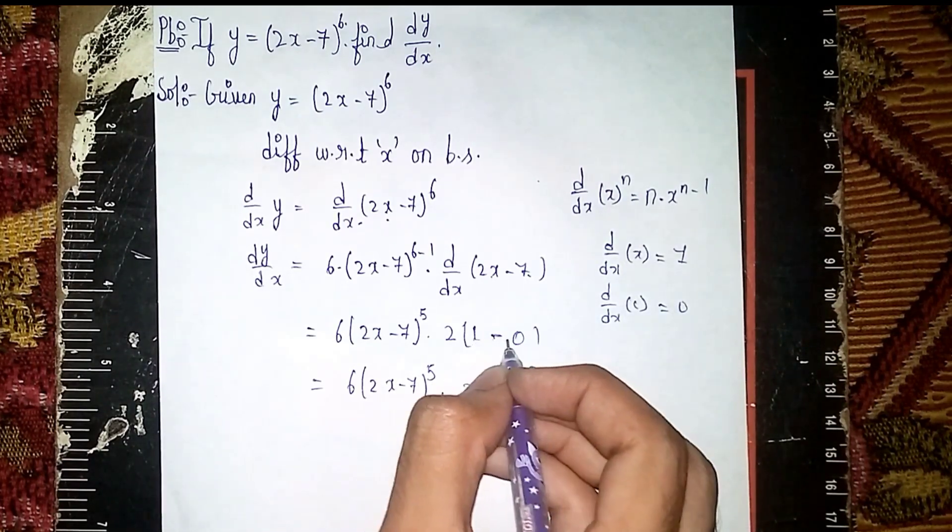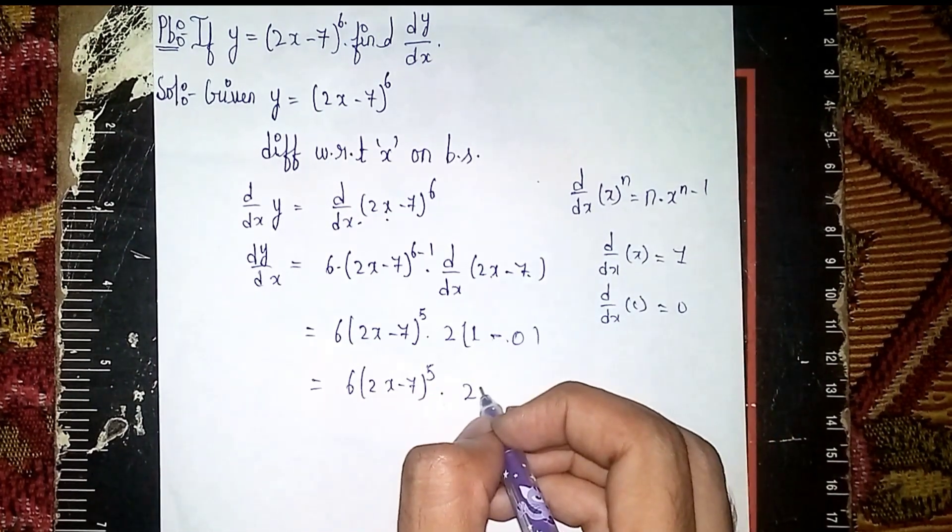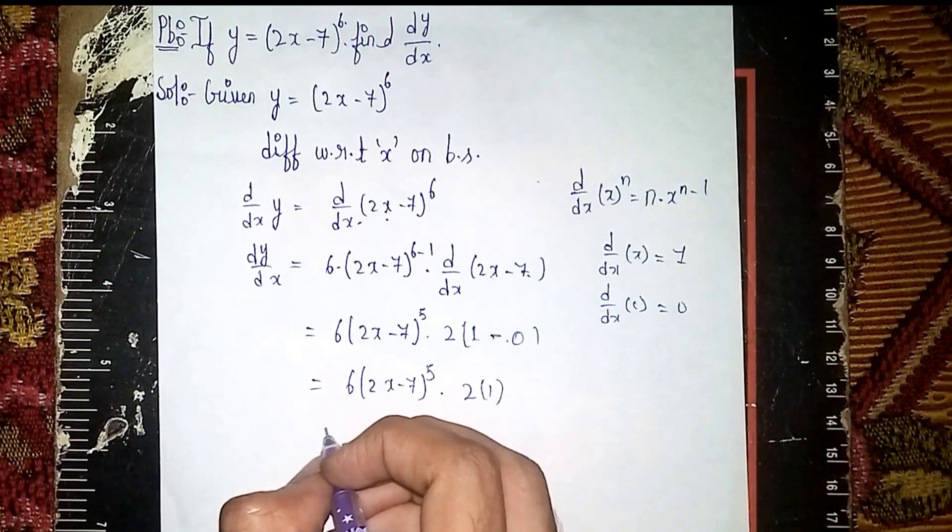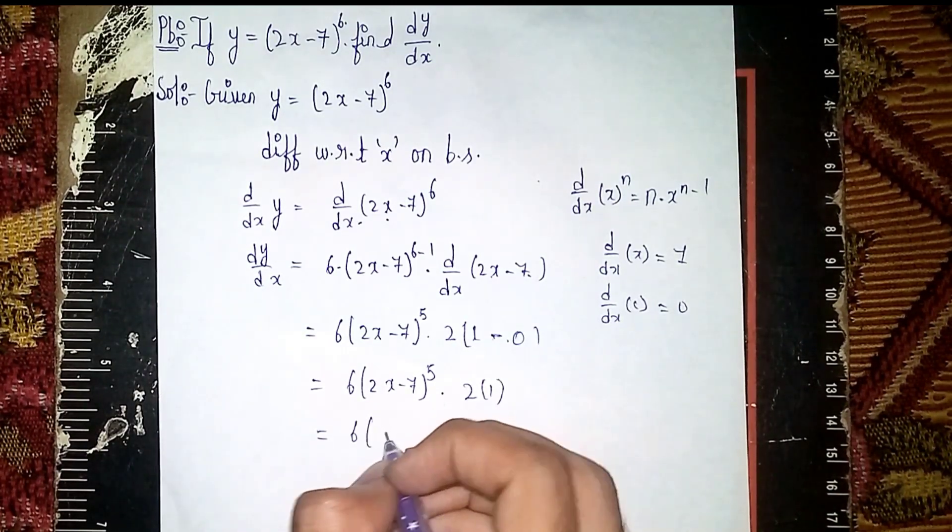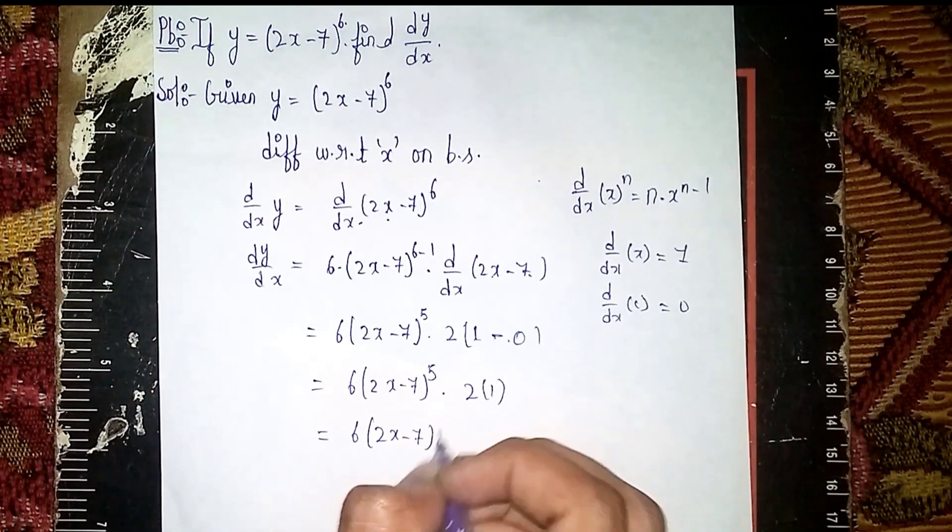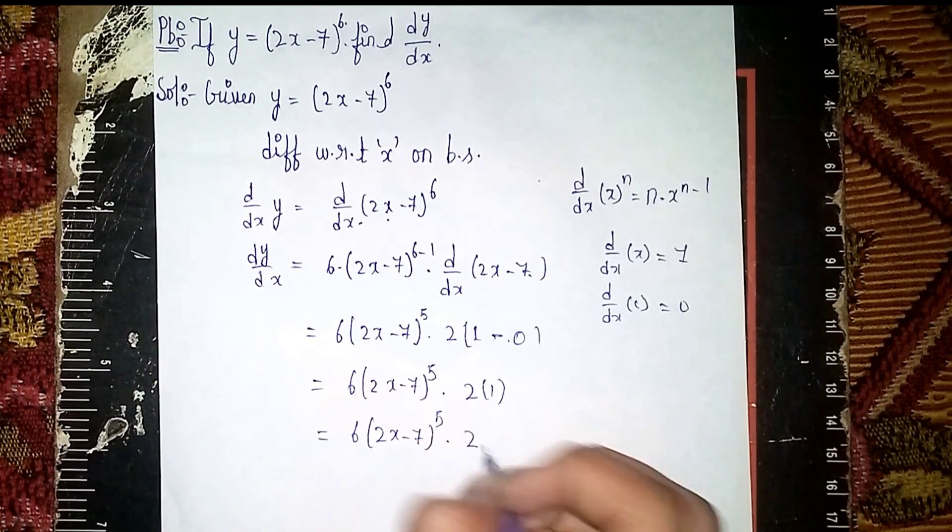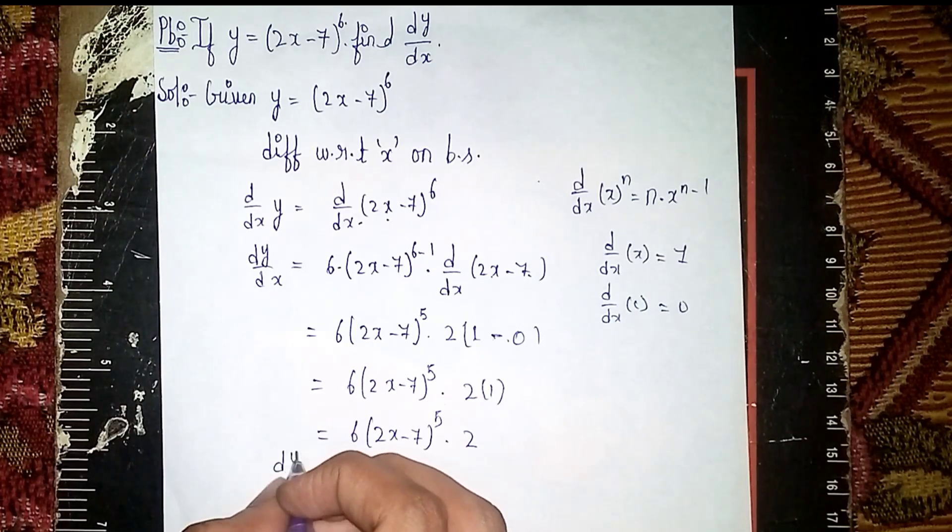Into 2. Now 1 minus 0 is 1, so 2·1. So it becomes 6·(2x - 7)^5·2.